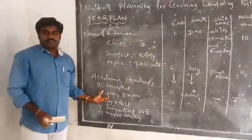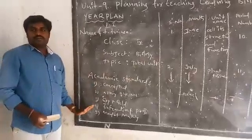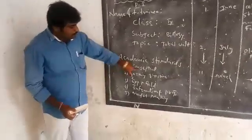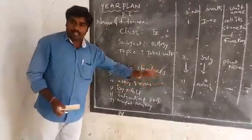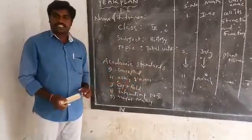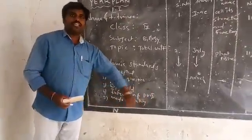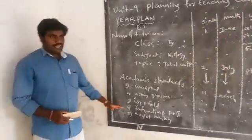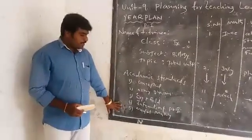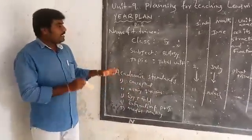The academic standards for Biological Science are: 1. Conceptual Understanding; 2. Asking Questions and Hypothesis; 3. Experimentation and Field Work; 4. Information and Project Works; 4. Model Making and Drawing; 5. Appreciation and Aesthetics; 5. Application and Life in Biological Science. There are approximately 5 academic standards in total.